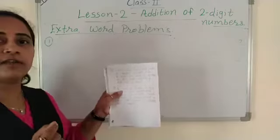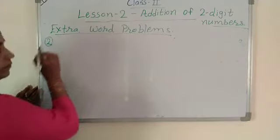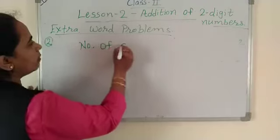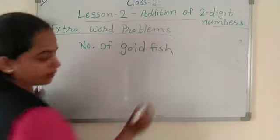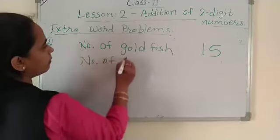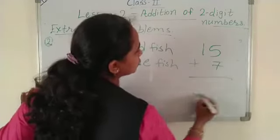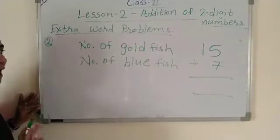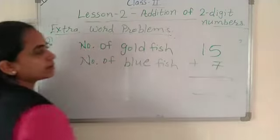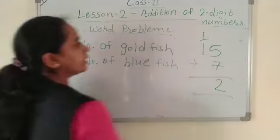How many fish? Number of goldfish is 15, and number of bluefish is 7. Add these together: 15 plus 7. So 5 plus 7 — counting up: 6, 7, 8, 9, 10, 11, 12. That gives 12 in the ones place with 1 to carry. Then 1 plus 1 is 2. Total: 22 fish.